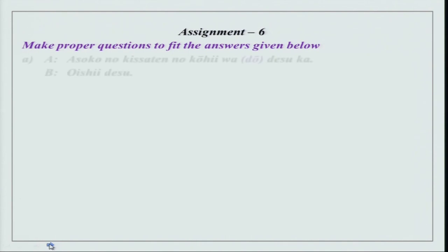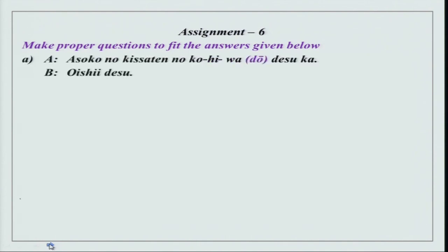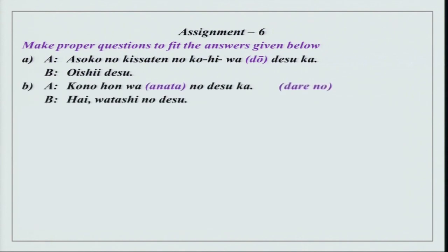Read the conversation A and B, and then you have to make the question. Asoko no kissaten no koohii wa dou desu ka? Oishii desu — if it was oishii, the answer would be: Hai, oishii desu. Kono hon wa anata no desu ka? Hai, watashi no desu. Kono hon wa dare no desu ka? Hai will not be there — just watashi no desu. You have to read the answer first and then make the question.